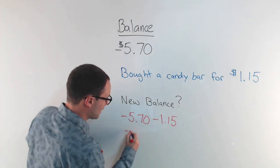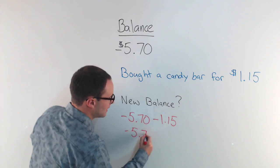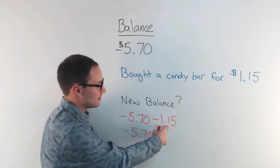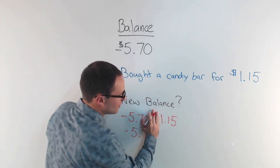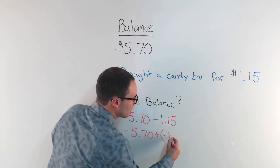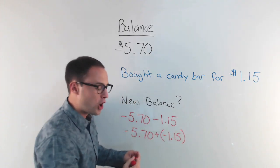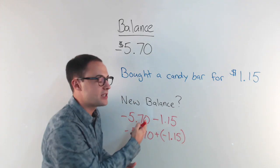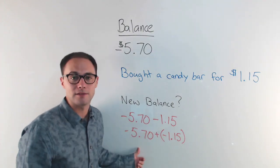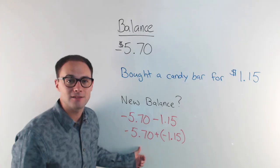So subtracting a rational number in this case is the same as adding its opposite. So I'm going to rewrite this as negative $5.70 plus adding the opposite. This was a positive $1.15. So I'm going to add a negative $1.15. All we're doing is just changing it to an addition problem. And now we're adding two negatives.